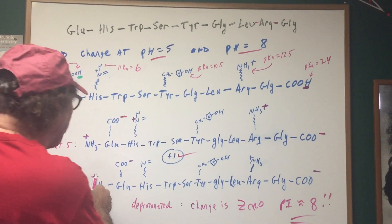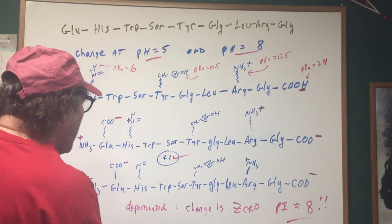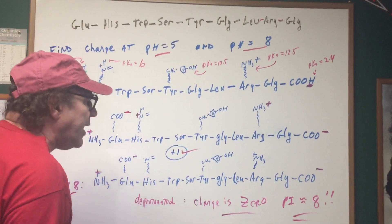So add them all up, you have a plus one, minus one, plus one, minus one. And therefore we get a charge of zero.